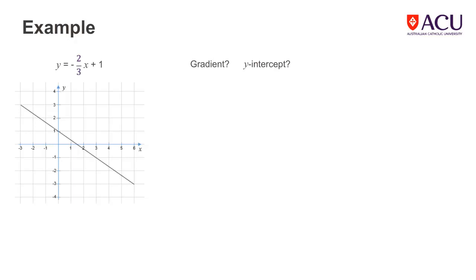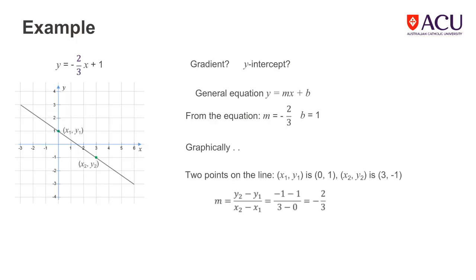Here we have the graph of the straight line y equals negative two-thirds x plus one. What are its gradient and y-intercept? From the general equation of a straight line, we can see that the gradient, m, is the coefficient of the x and the value of b is the value of the y-intercept. Thus, the gradient is negative two-thirds and the y-intercept is one. This can also be calculated graphically using the formula for gradient and observing where the line cuts the y-axis to give the value of the y-intercept. The fact that the line slopes downward from left to right also means that the gradient is negative.